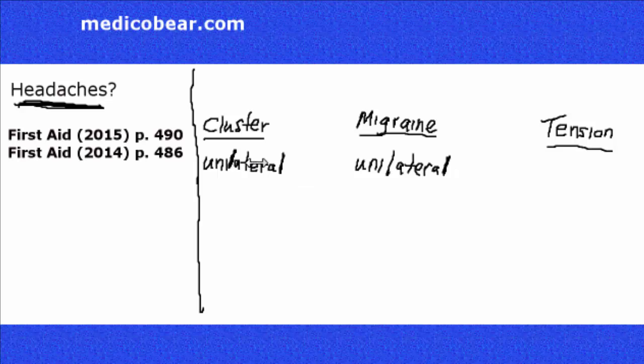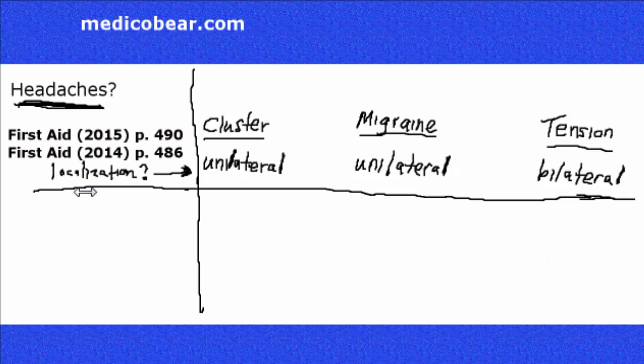Most commonly, cluster headaches are unilateral and migraine headaches are unilateral. Tension headaches are going to be bilateral. So that is us talking about the localization of the pain, on one side of the head or on both sides of the head.